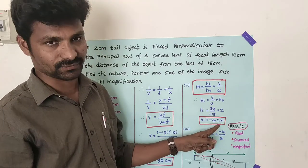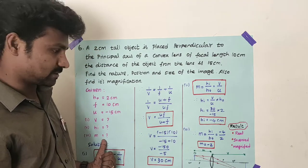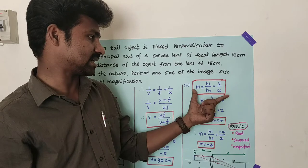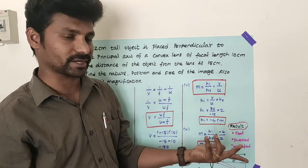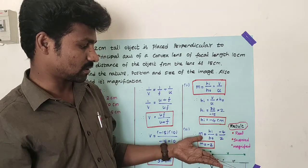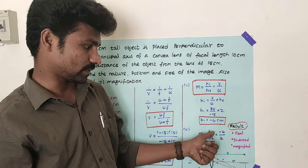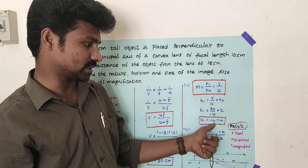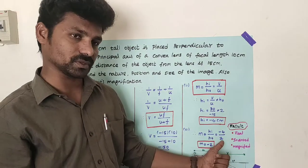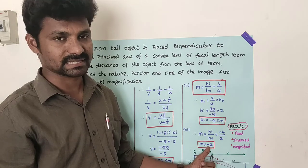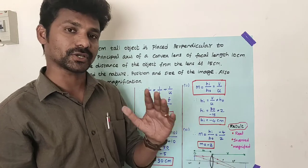For magnification, we use m = hᵢ divided by h₀, or equivalently v by u. Taking m = hᵢ / h₀ = minus 4 divided by 2 = minus 2. The magnification is minus 2. The magnitude greater than 1 means the image is enlarged, and the negative sign means it is real and inverted.